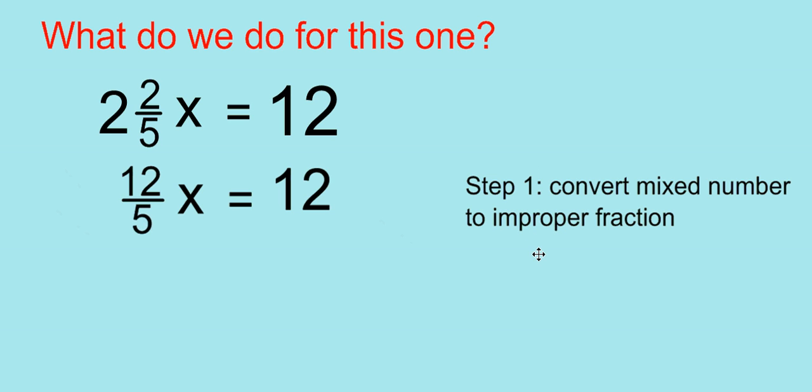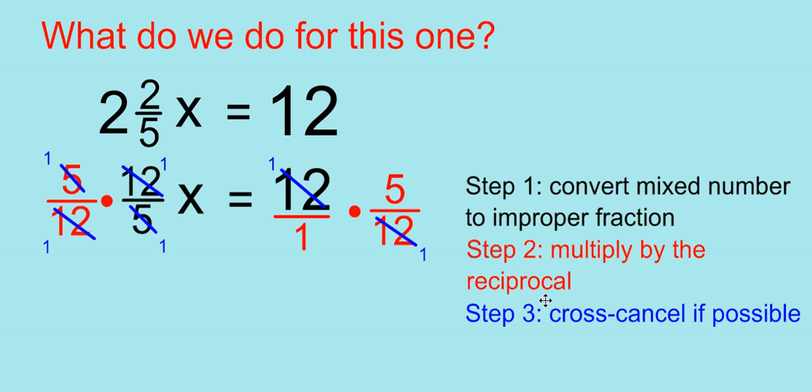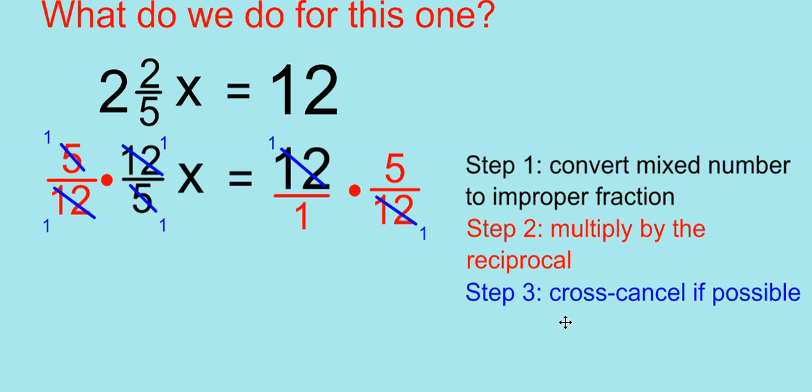The next thing we need to do is, that's right, multiply by the reciprocal. So we're multiplying both sides by 5/12. And finally, we want to cross-cancel if possible.